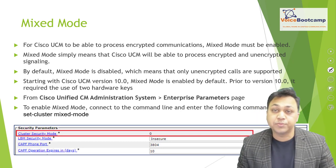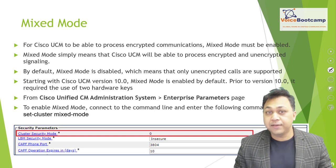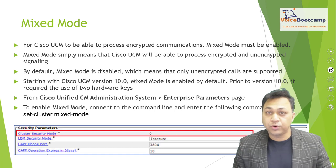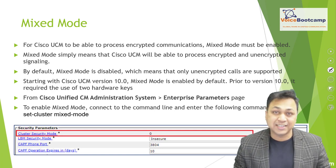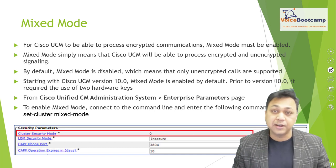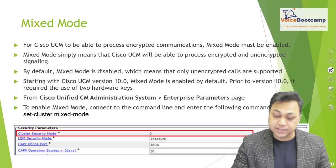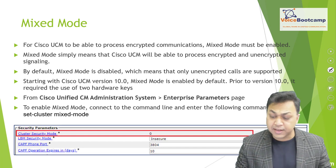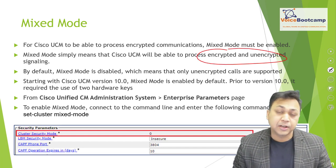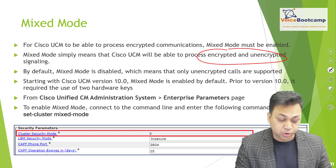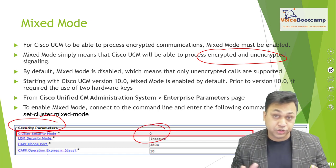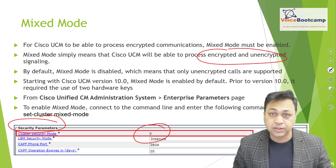For Cisco CUCM to be able to process encrypted communication, you have to enable mixed mode authentication. Mixed mode is basically where CUCM will be able to process both encrypted and unencrypted signaling. By default, mixed mode is disabled. When you go to the enterprise parameters, you will see the cluster security setting is set to zero, indicating mixed mode is disabled.